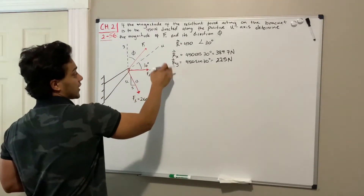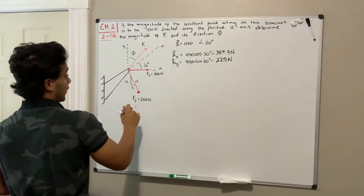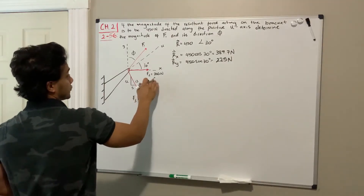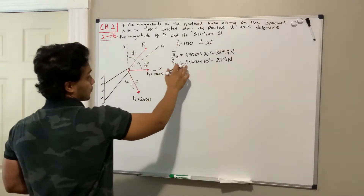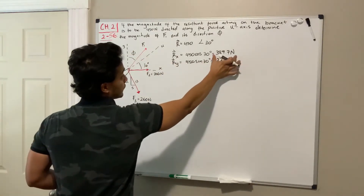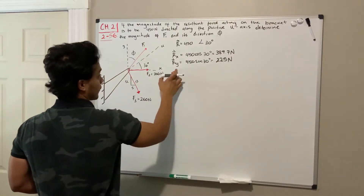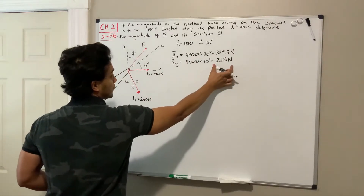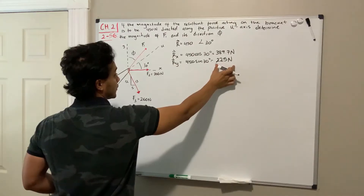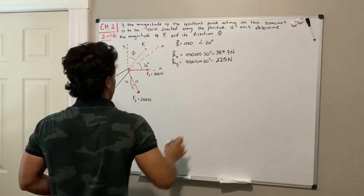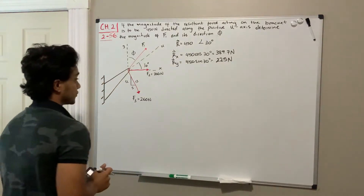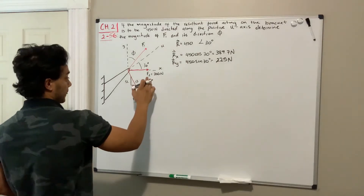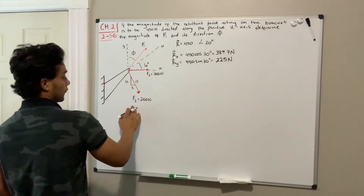So why did I decompose these? Well, the sum of F3, F2, and F1 in the x-direction should give me 389.7, and the same for the y — the sum of these three forces should add up to 225 newtons. So let's start by decomposing F2 and F3, which are the ones we know.